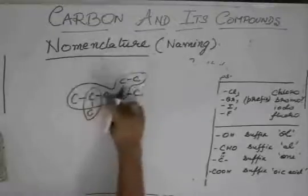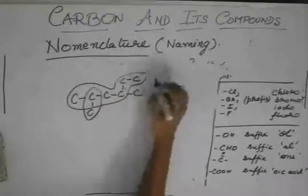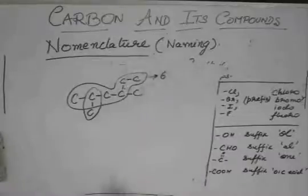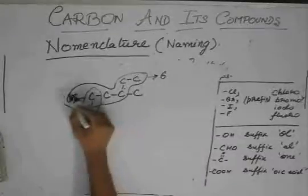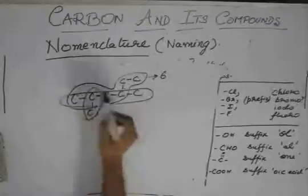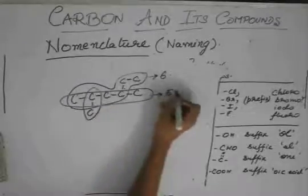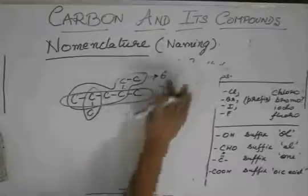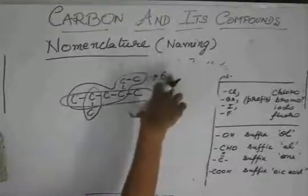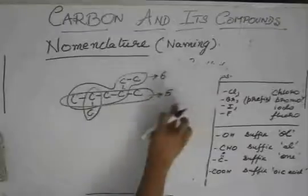You might make the mistake that only these three carbons are the chain. But see, the chain goes like this - one, two, three, four, five, six. This is a six-membered, six-carbon chain. And this one, which is the straight one, is five. So, the six-carbon chain is the longest chain and not this straight chain.